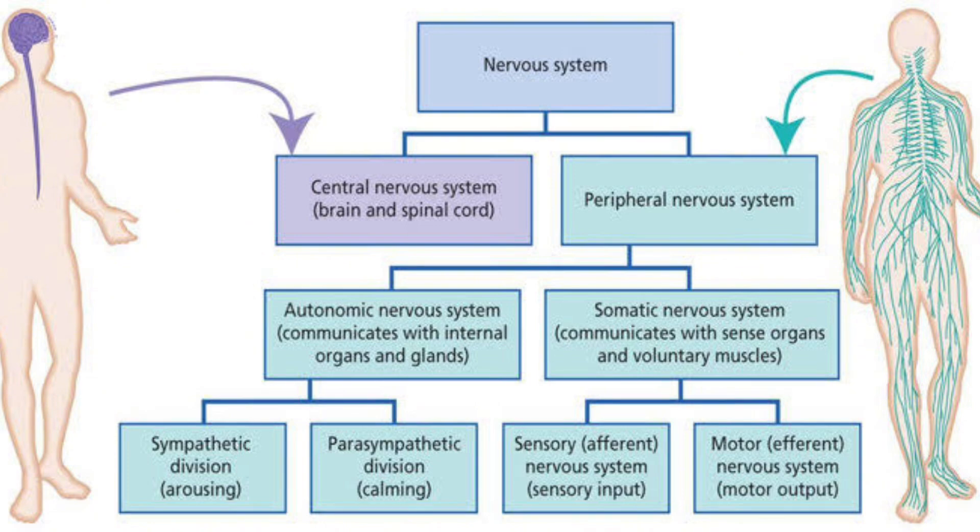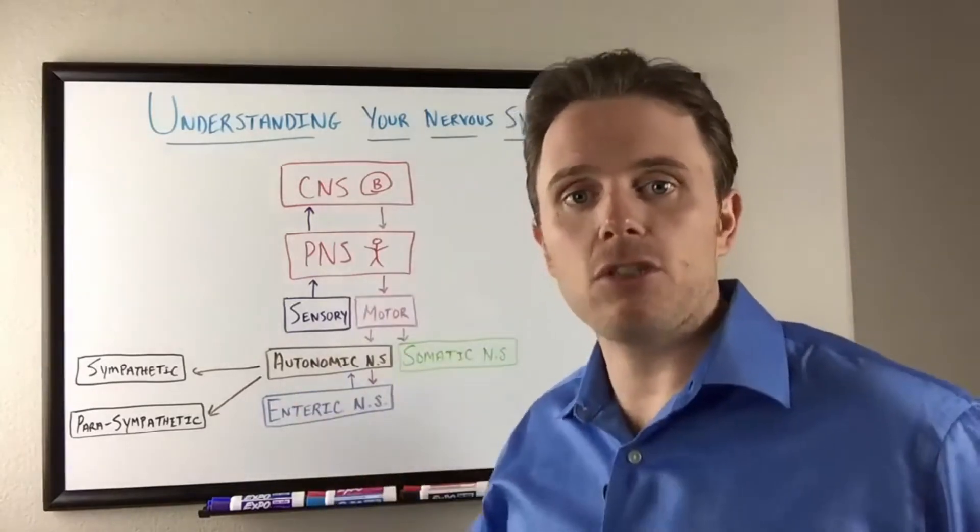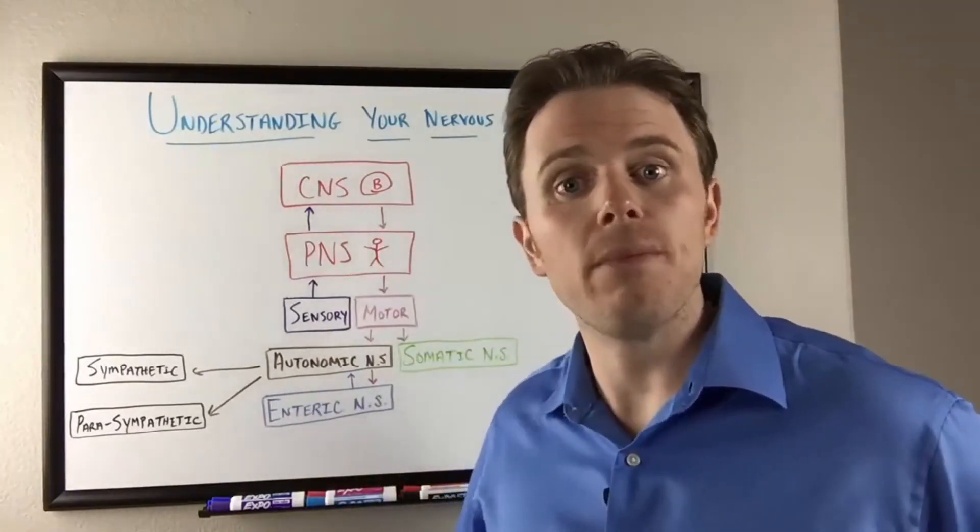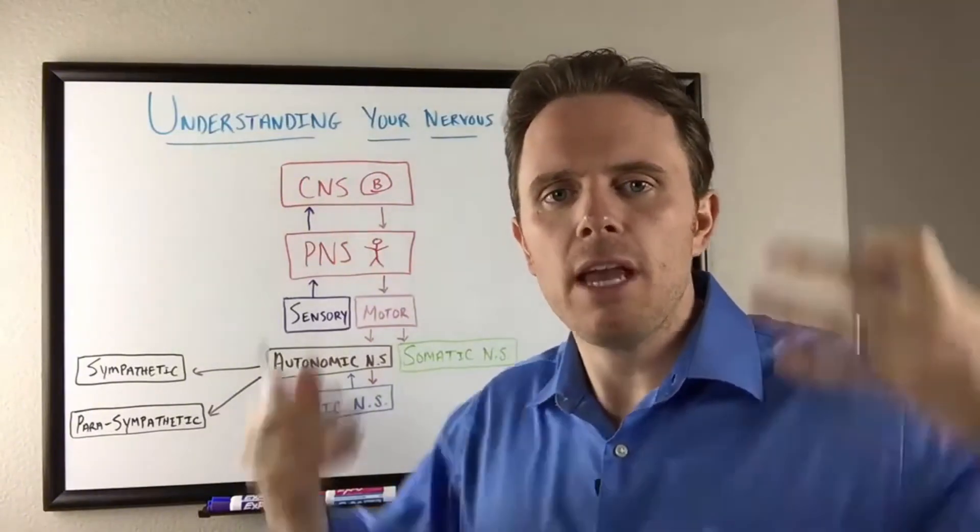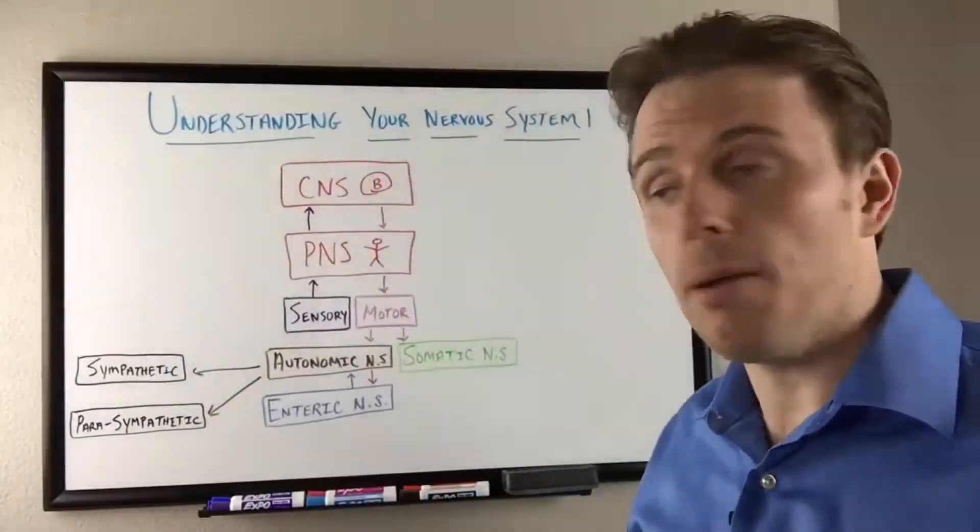So first off, we have our central nervous system and our peripheral nervous system. Central nervous system being our brain and spinal cord, and that branches off into our peripheral nervous system, which controls arms and legs and extremities. That's a really important concept. Everything starts from the brain, goes down the spine and then to the periphery.